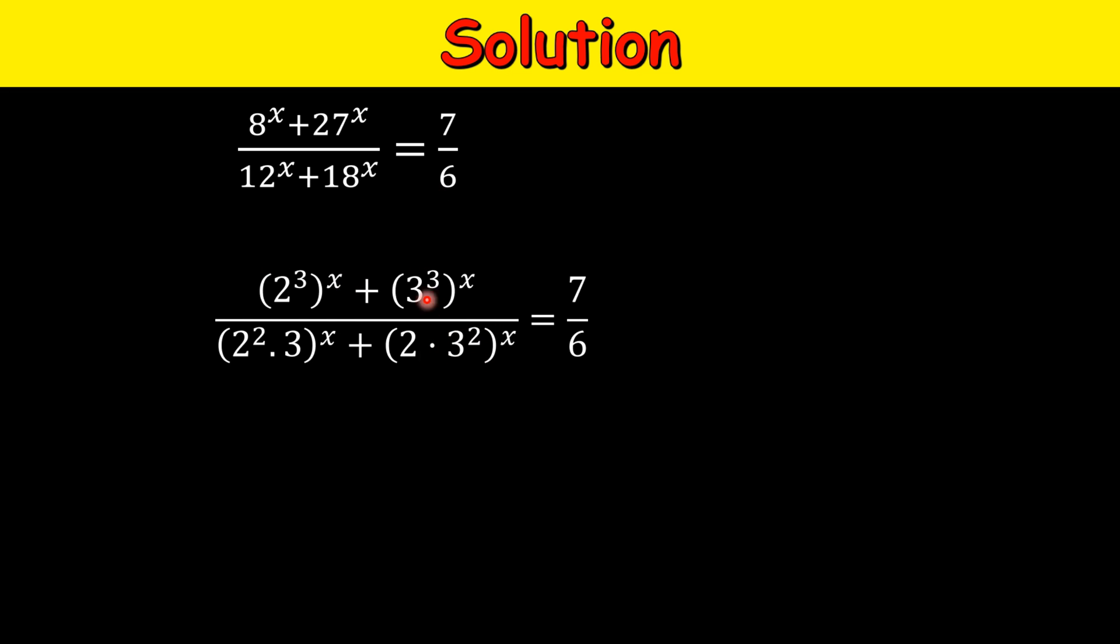We are rewriting this equation now. If we have a^m raised to the power of n, then we can reverse it since this is the same as a^(mn). We can rewrite the numerator where 3x comes inside the bracket and 3 goes outside. In the denominator we have taken 2 × 3 raised to the power of x as common. In the first term we have 2^x extra and in the second one we have 3^x.